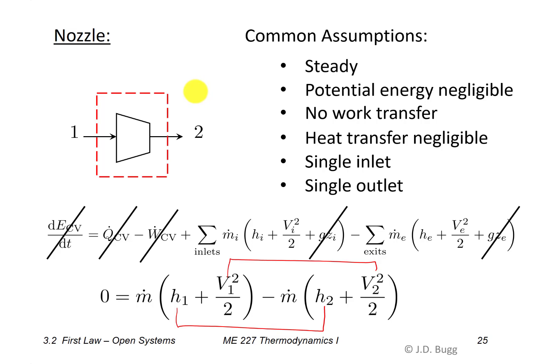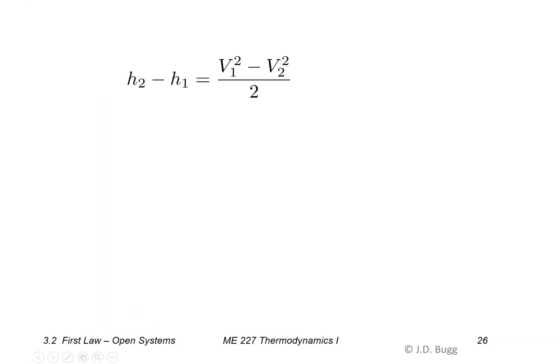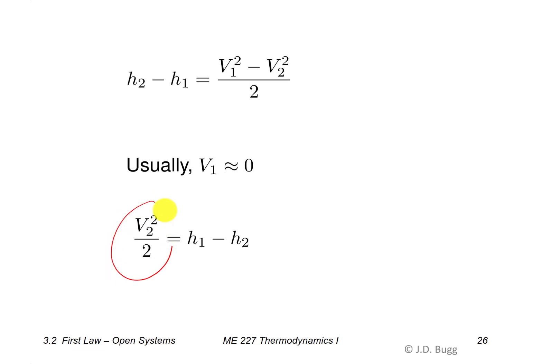The enthalpy through a nozzle goes down and the kinetic energy goes up, and these effects must offset each other. With a single inlet and exit at steady state, the mass flow rates cancel. Since the inlet kinetic energy is typically very low compared to the exit, it is commonly neglected, giving the final result: V2²/2 = H1 − H2, meaning the exit kinetic energy per unit mass equals the decrease in enthalpy across the nozzle.